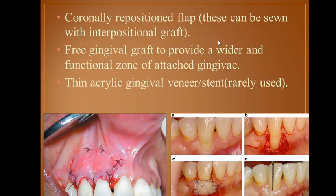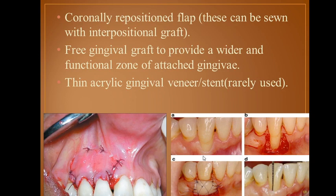Another type is the coronally repositioned flap, which can be combined with interpositional grafts. There is also the free gingival graft, which provides a wider and functional zone of attached gingiva. Here you can see recession of the gingiva, then the flap and graft are placed, and after a few weeks it looks perfect. We use a probe to check the difference, and there is clearly a big improvement.